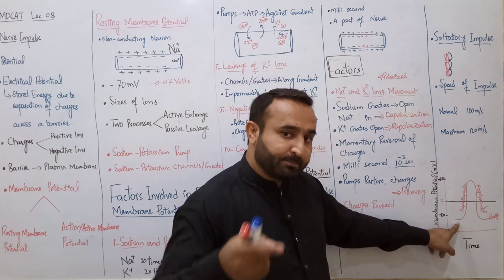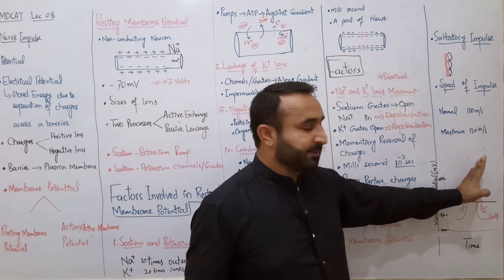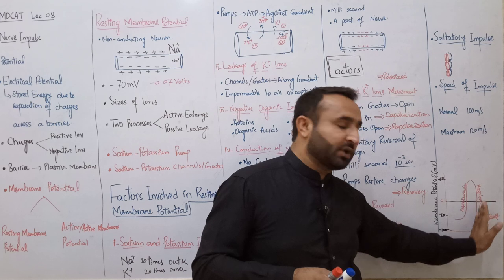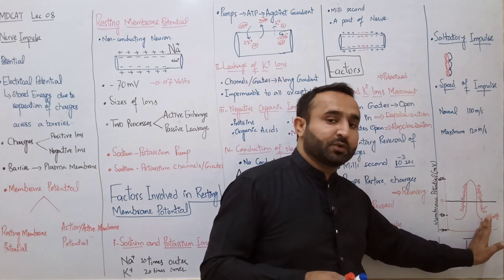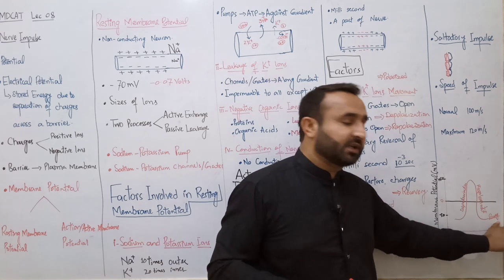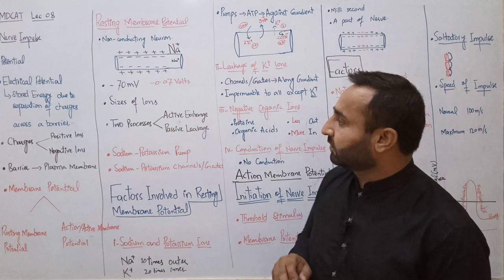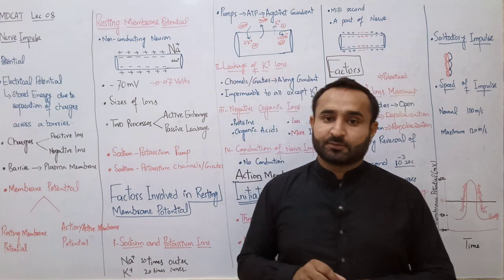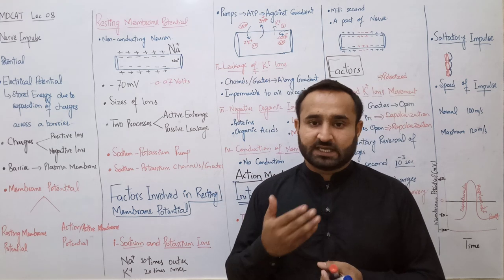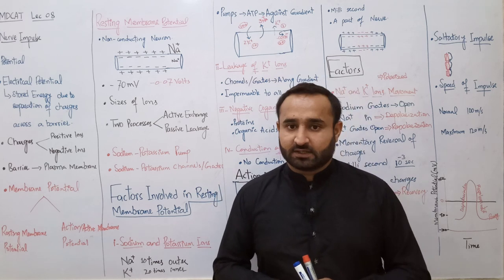جب impulse شروع ہوئی تو depolarization شروع ہوئی - poles ختم ہوگئے۔ پھر جب potassium leakage شروع ہوئی تو باہر negative اور اندر positive ہوگیا جہاں سے impulse گزر رہی تھی۔ پھر recovery - sodium اور potassium pumps حرکت میں آئے اور resting membrane potential دوبارہ maintain کرنا شروع کیا۔ یہ تھا ہمارا topic - nerve impulse کیا ہے، active membrane potential کیا ہے، resting membrane potential کیا ہے، nerve impulse conduct کیسے ہوتی ہے۔ Thank you very much۔